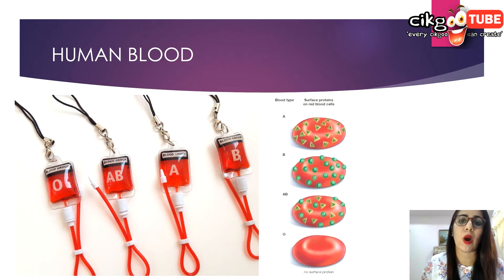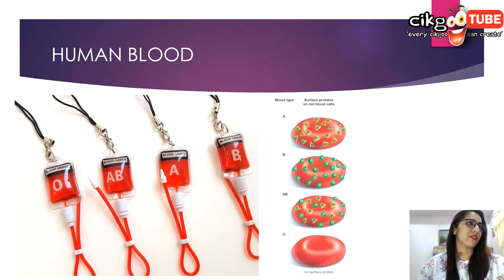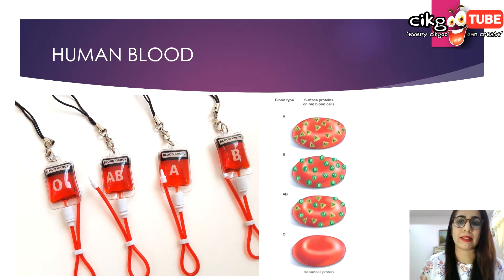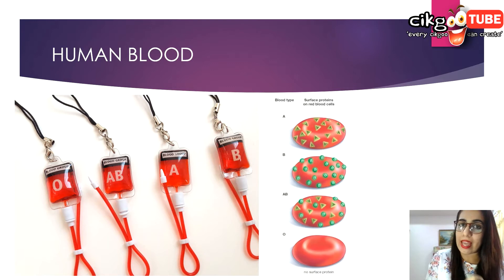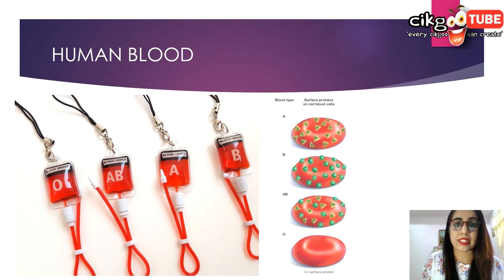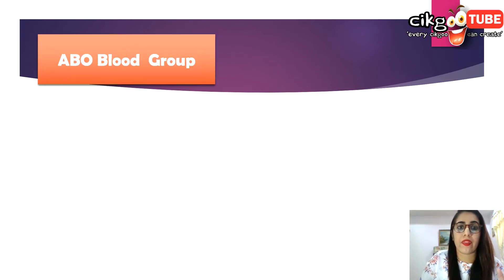The blood group you belong to depends on what you have inherited from your parents. There is no difference in our blood color — we all have the same blood color. The difference in human blood is actually due to the presence and absence of certain protein molecules called antigens and antibodies. The antigens are on the surface of the red blood cells and the antibodies are found in the blood plasma.